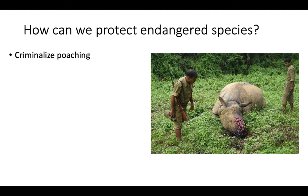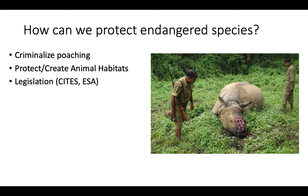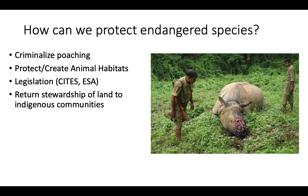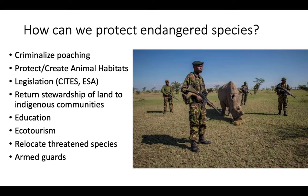So what can we do to protect endangered species? We want to criminalize poaching — here you can see a picture of a rhino that has been poached, killed with its horn cut off. Many people believe rhino horns have medicinal properties, but they do not. We can protect or create animal habitats, return stewardship of the land to indigenous communities, educate people about endangered species to raise awareness and public support. At the same time, we can build an ecotourism industry so that poachers are instead serving as tour guides — many are not killing animals by choice but because they have no other way to feed their family. We can also relocate threatened species or protect them with armed guards.